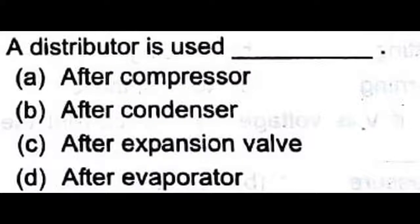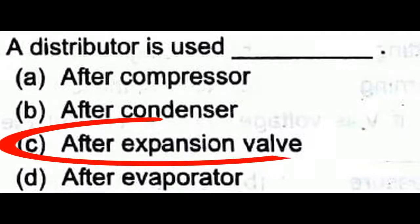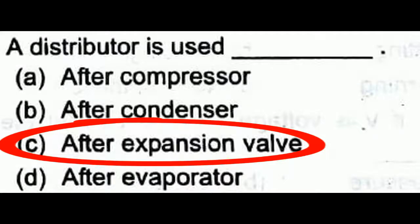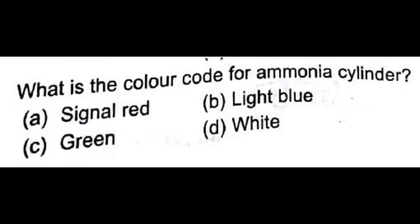The first question: a distributor is used after which component — compressor, condenser, expansion valve, or after evaporator? A distributor is basically used to distribute the refrigerant throughout the system, so it is used after the expansion valve. Option C is correct.